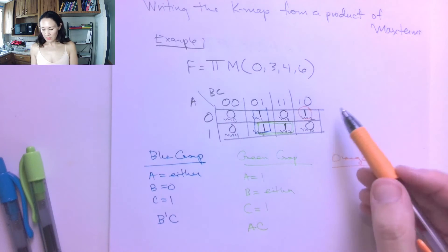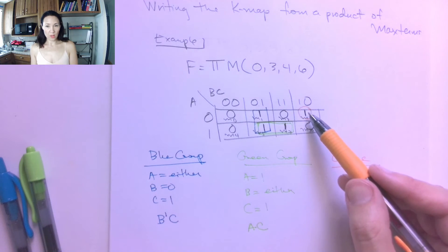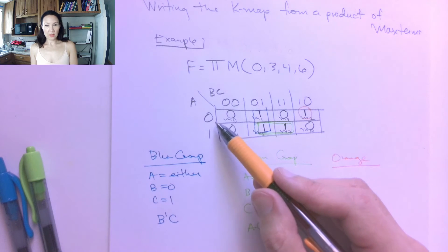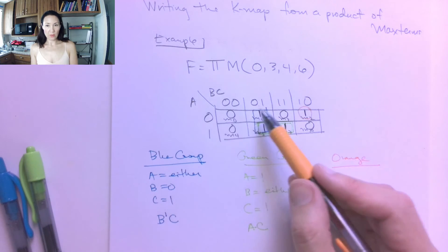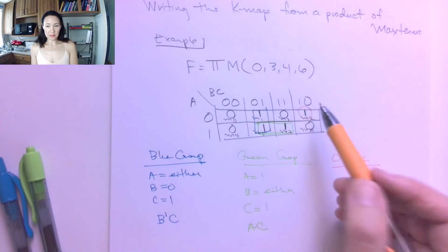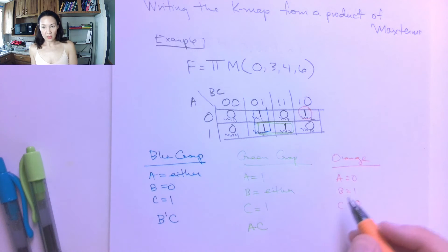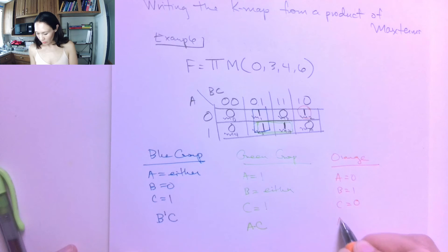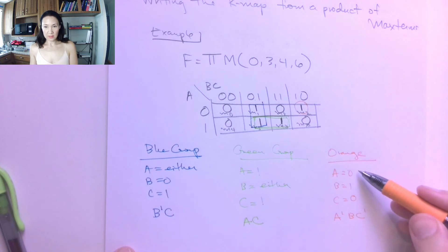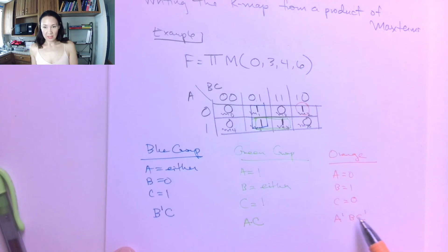And then for orange, we don't actually have an orange grouping here, because this is just a single 1. So what gives us this 1? That's the case when A is 0, B is 1, and C is 0. So this is A equals 0, B equals 1, C equals 0. We have no either cases, so this literal product term is going to be A-not, B, and it with C-not. So wherever you see an equals 0, that term gets complemented in your product term.